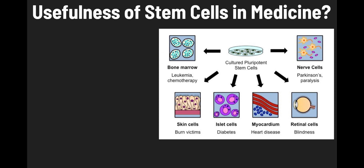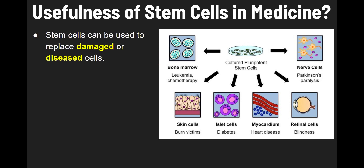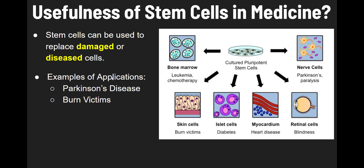Stem cells can be used to replace damaged or diseased cells. For example, stem cells might be useful in treating Parkinson's disease, where nerve cells are negatively affected — stem cells can differentiate into nerve cells to replace the damaged ones. Another application would be for burn victims: if skin is severely damaged, a stem cell can be caused to differentiate into new skin cells to help those burns heal with new skin.